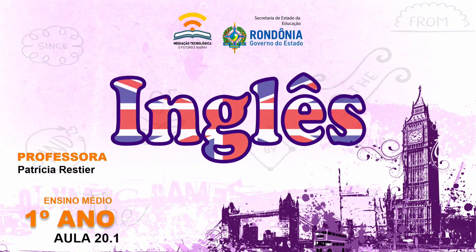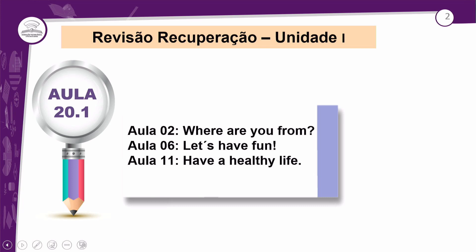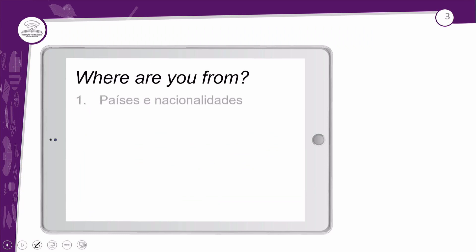Aula 20.1. Revisão para recuperação — as aulas são essas três: aula número 2, aula número 6 e 11. A aula 2, a gente viu com o título de 'Where Are You From?', sobre countries and nationalities. Na aula número 6, falamos de prepositions e 'Have a Healthy Life'. São só essas três aulas — coisa bem simples, bem prática. Vamos começar na aula 2, 'Where Are You From?', com países, nacionalidades e o verbo to be.